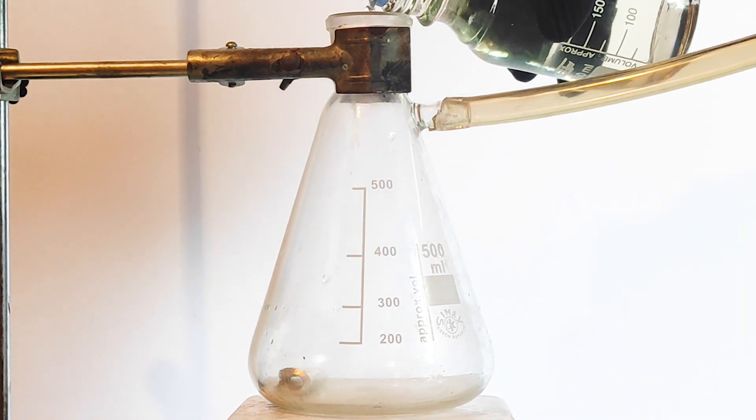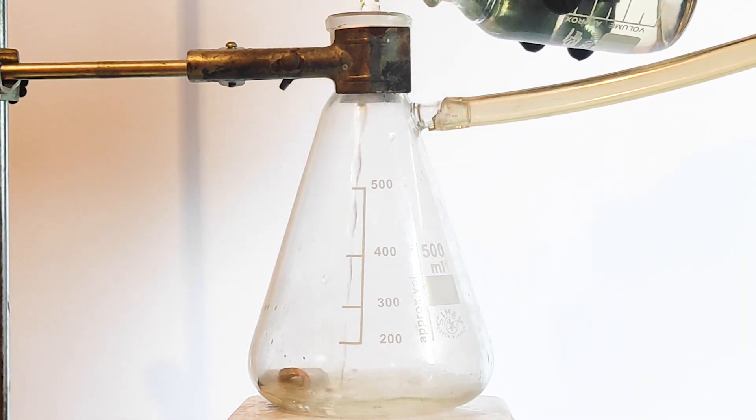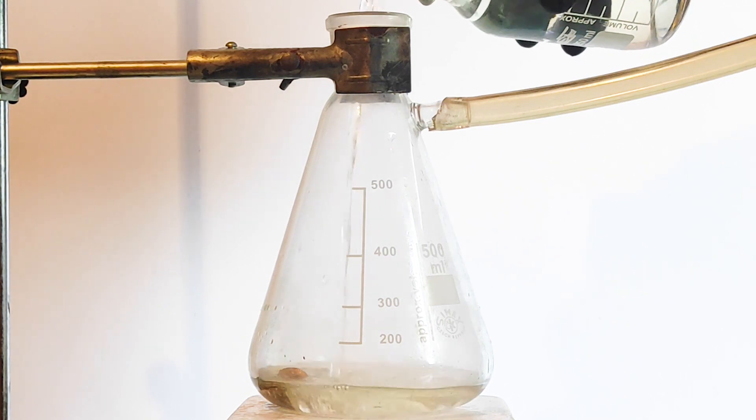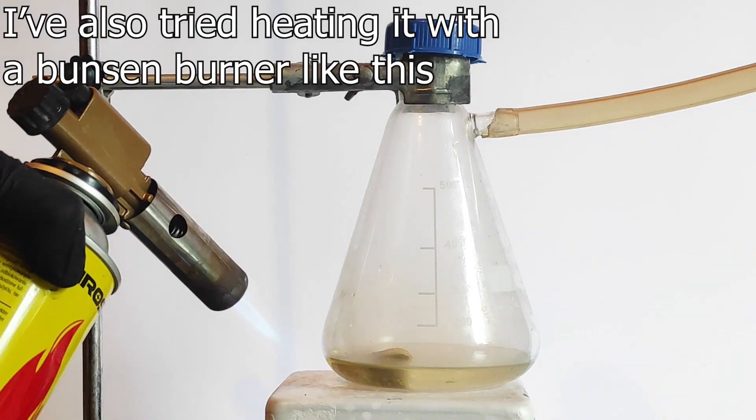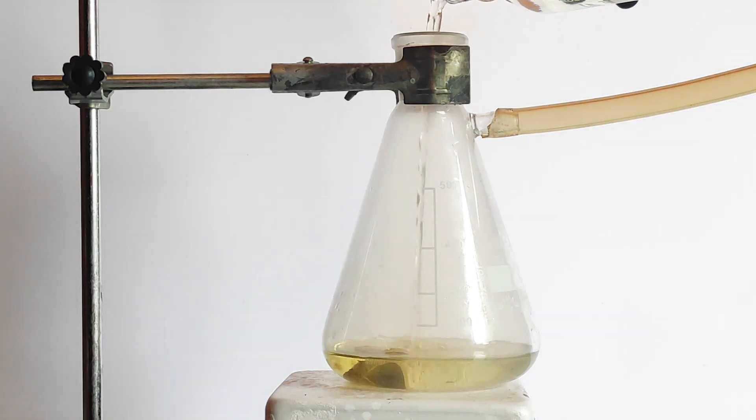But seriously, now that I've got the silver into the flask, I have added a bunch of concentrated nitric acid. At first, I was quite confused why the acid didn't immediately start dissolving the silver. So, I've added even more.